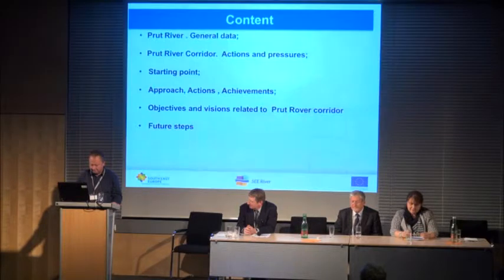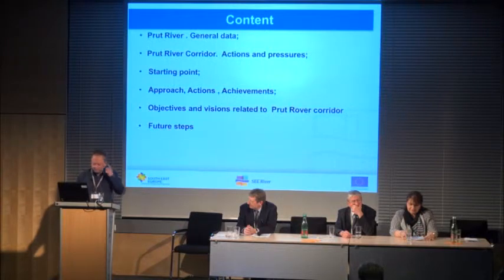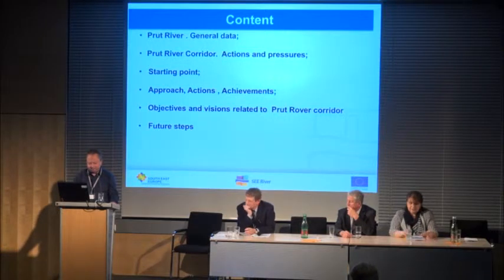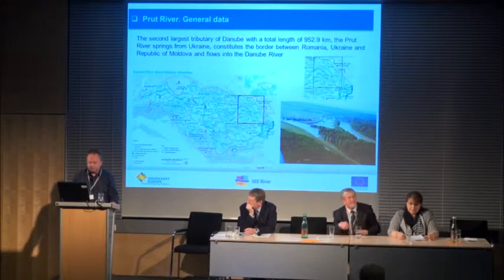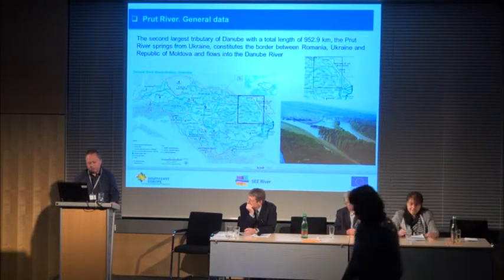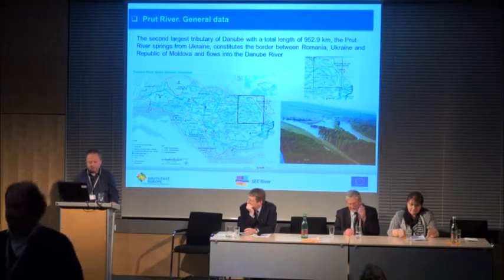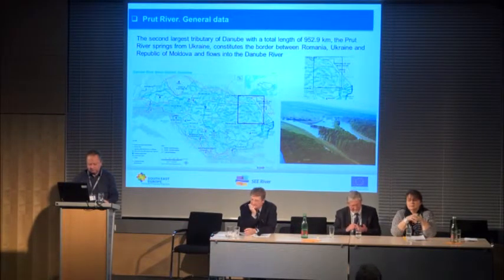So let's go to the facts. My presentation covers some data about the Prut River corridor, pressures, starting point, approach, actions and results, objectives and vision related to the Prut River corridor, and future steps. The Prut River is the second largest tributary of the Danube with a total length of about 960 kilometers. It springs from Ukraine and mainly constitutes the border between Romania, Ukraine, and the Republic of Moldova, and flows into the Danube River. We have around 650 kilometers of border with Moldova — it is exclusively a river border.